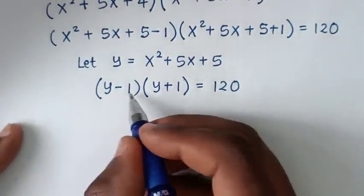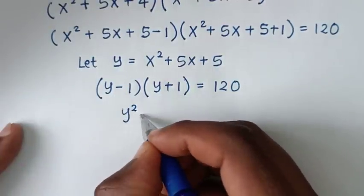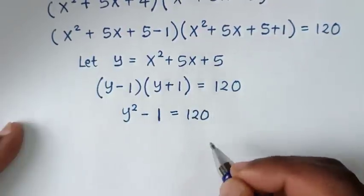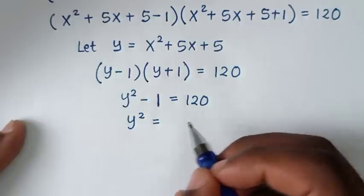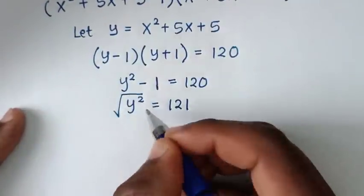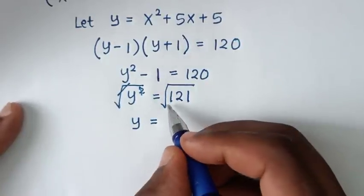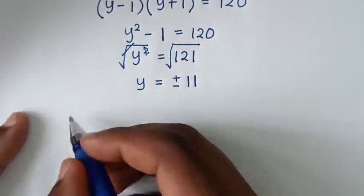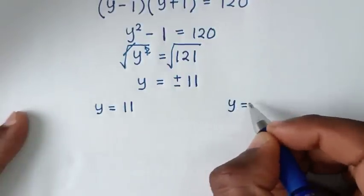From here, (y − 1)(y + 1) is in the form of a difference of squares, so it equals y² − 1 = 120. Then y² = 120 + 1 = 121. Applying square roots on both sides, y = ±√121 = ±11. So we have two solutions: y = 11 and y = −11.